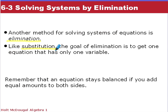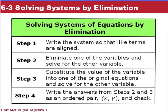This is our third method, using elimination. We talked substitution yesterday. For elimination, our goal, as the name says, is to eliminate one of our variables so we only end up with one variable, as we did with substitution. Remember that an equation stays balanced when we do the same thing to both sides. Here are the steps: write the system so that like terms are aligned — line up your x, your y, and your constants. Eliminate one variable by adding or subtracting. Then substitute the value back into the other equation and write your answer as an ordered pair. Steps three and four are the same as what you did for substitution.